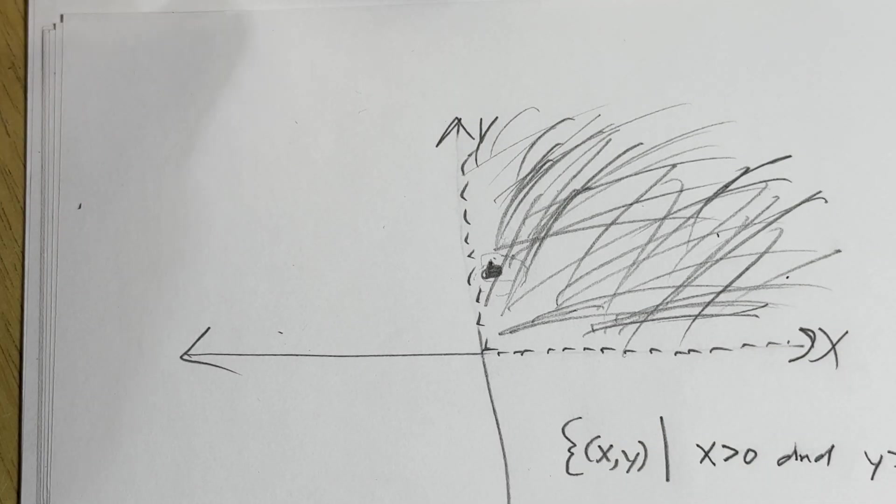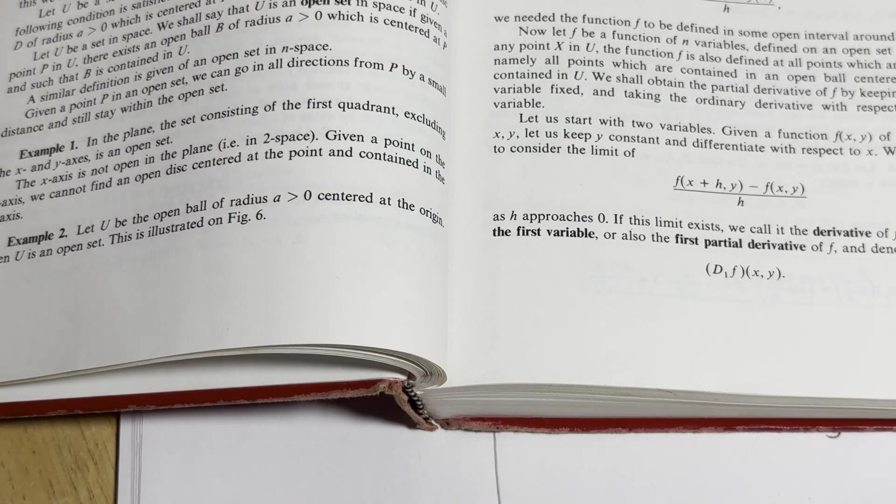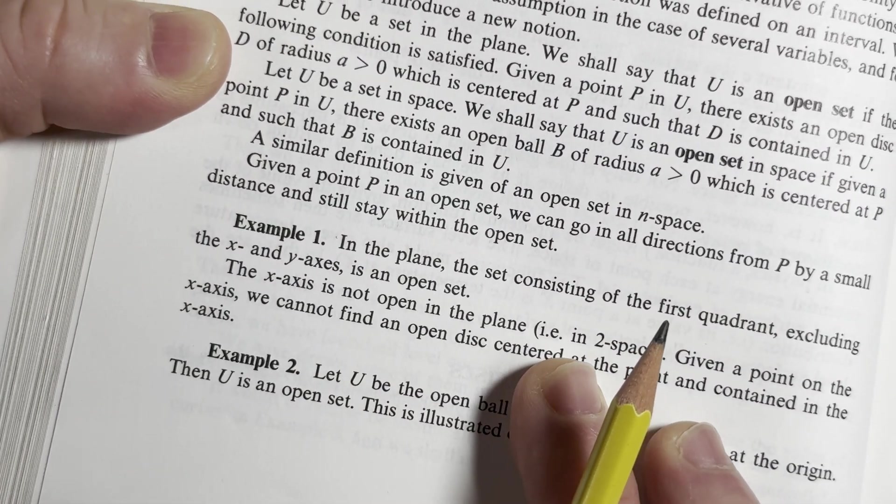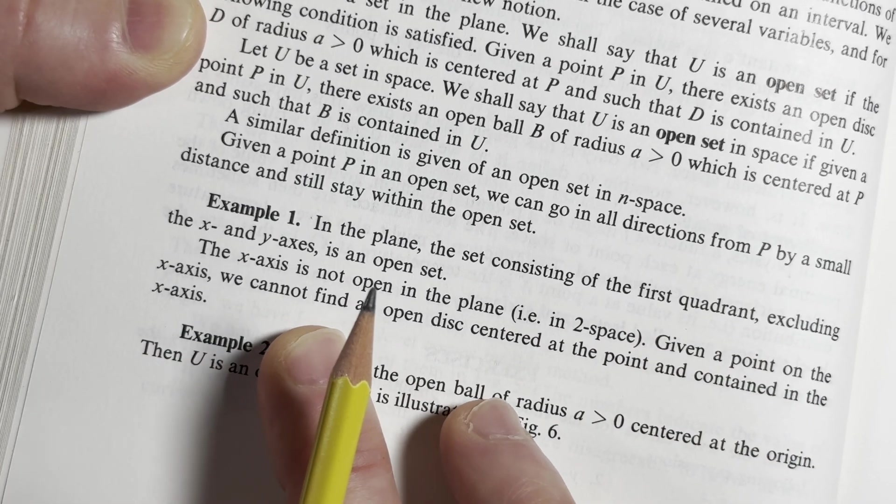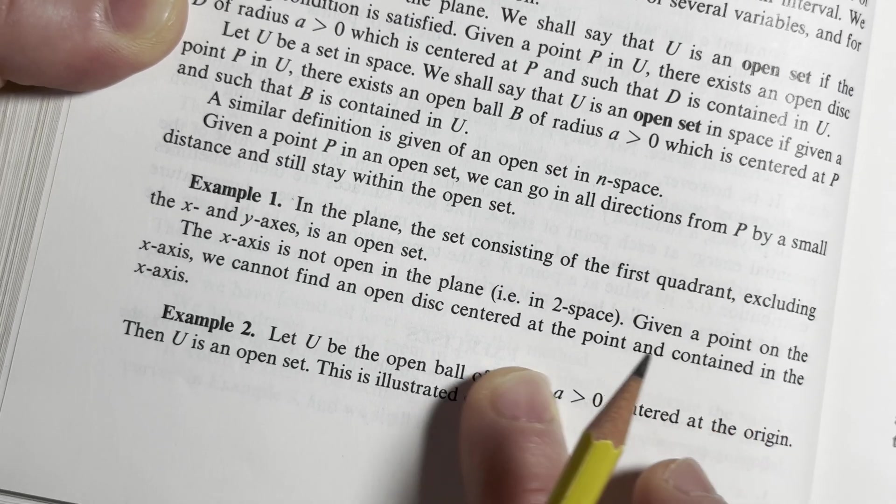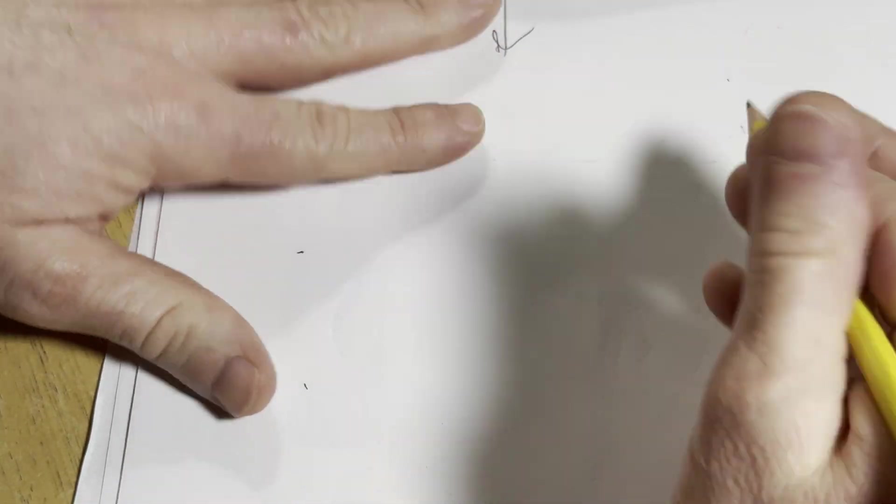There is another statement in the example that we should look at and we should verify, at least with our intuition, or try to. The x-axis is not open in the plane. Given a point P on the x-axis, we cannot find an open disk centered at the point and contained in the x-axis. That's true. Let's do it. Let's just do it again.